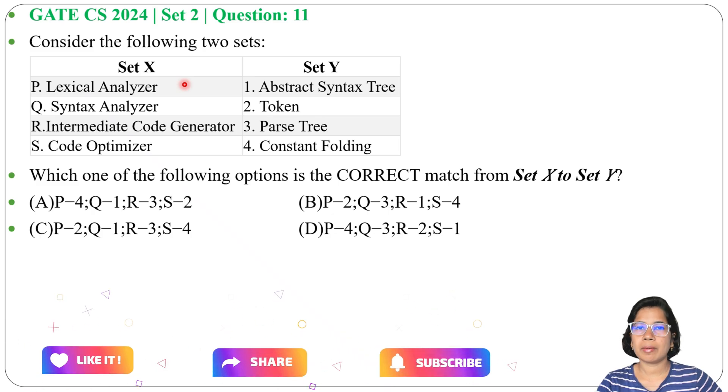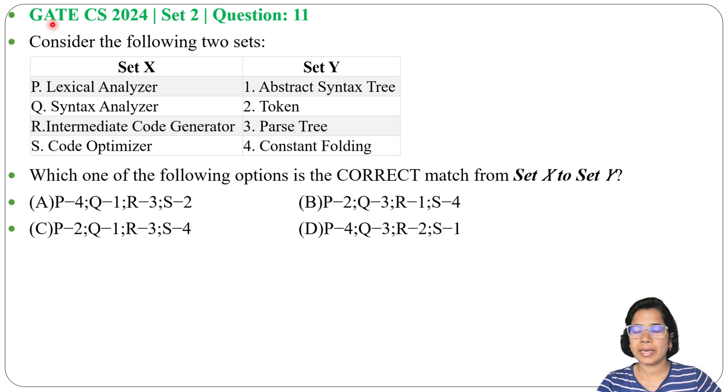Let's solve one previous question of compiler. This question was asked in GATE 2024 Set 2 Question 11. Consider the following two sets, Set X and Set Y are given. Which one of the following options is the correct match from Set X to Set Y?